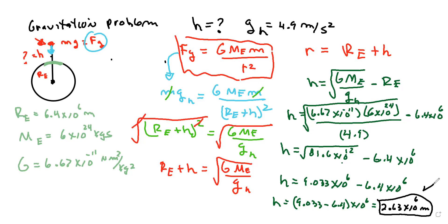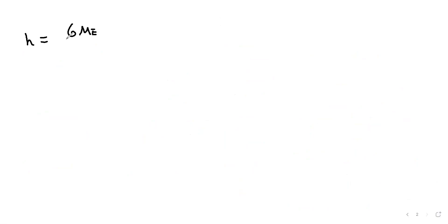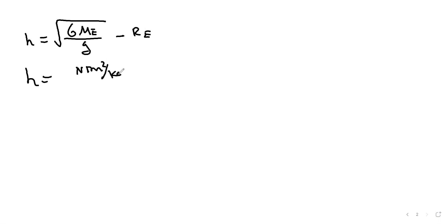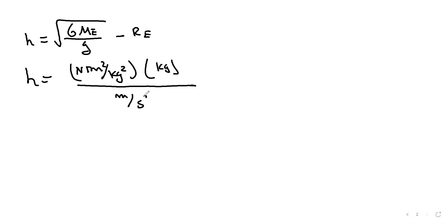Let me work out the units quickly so we're on the same page. We said h equals the square root of G times mass of the Earth divided by g_h, minus R_E. The units for G are newton meters squared over kilograms squared, mass of the Earth is in kilograms, and g_h is meters per second squared. The radius of the Earth is in meters.